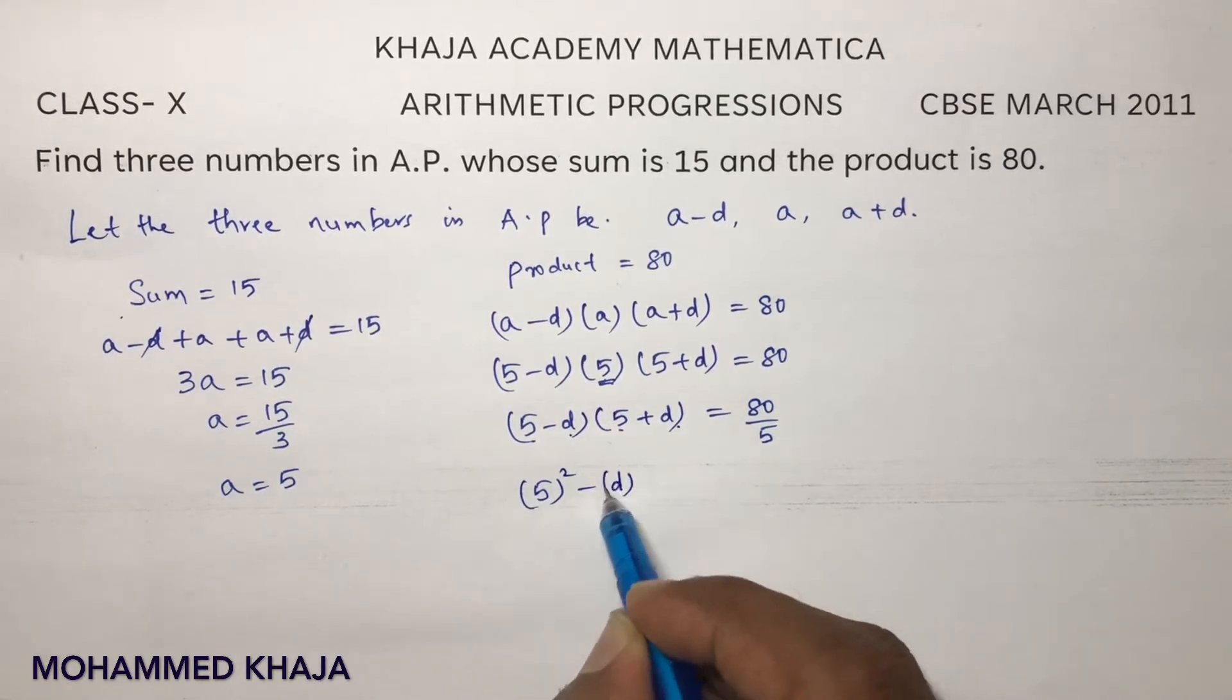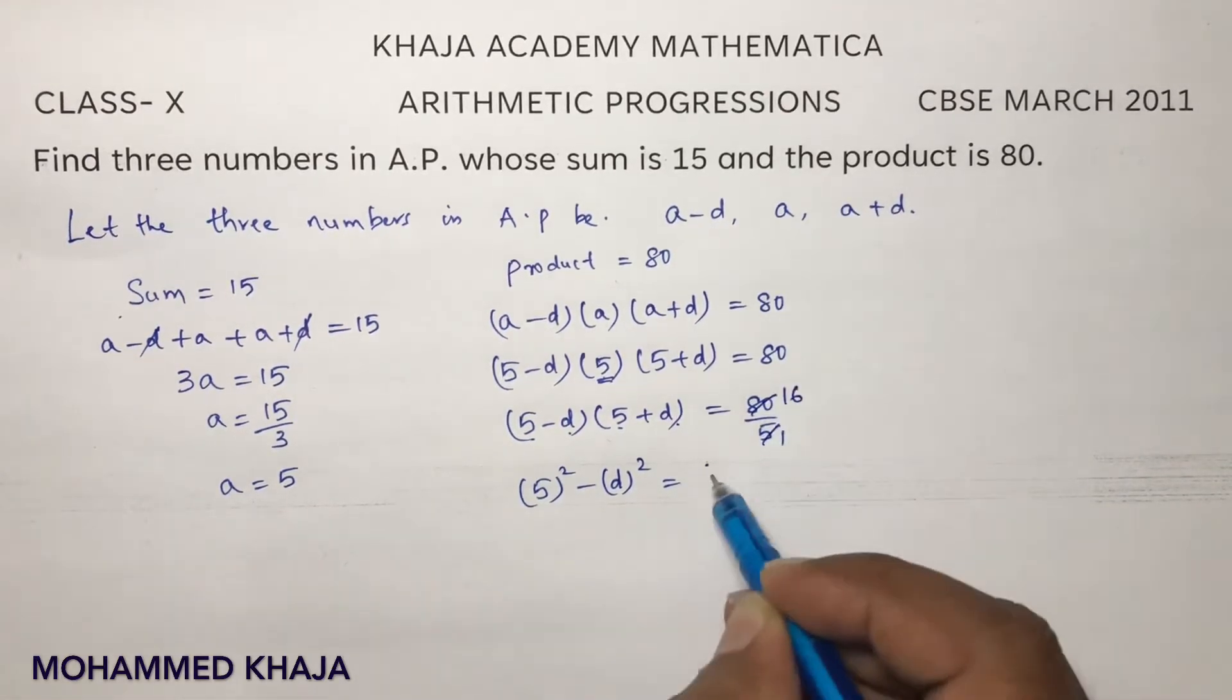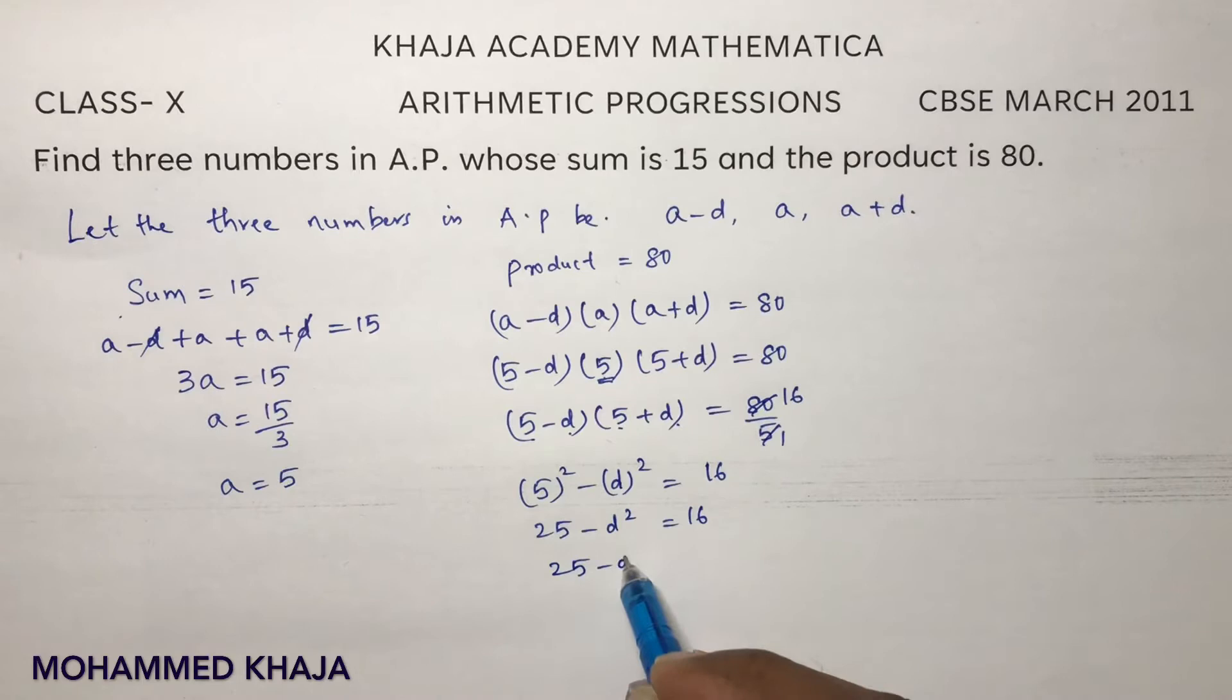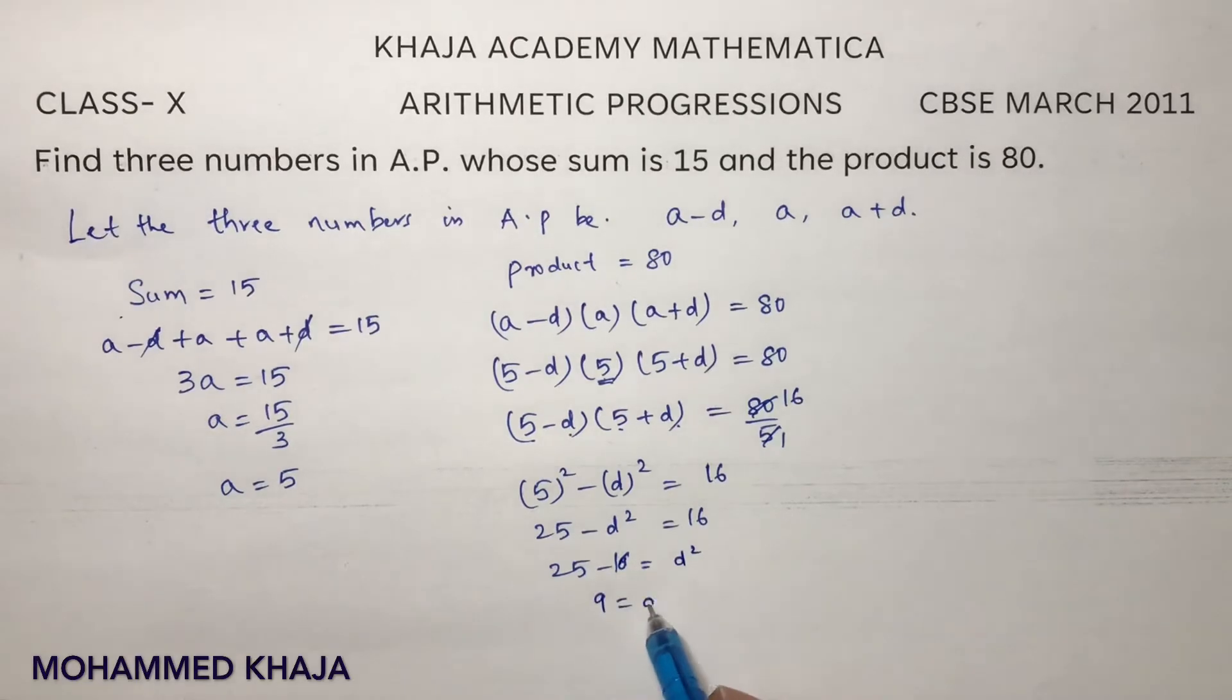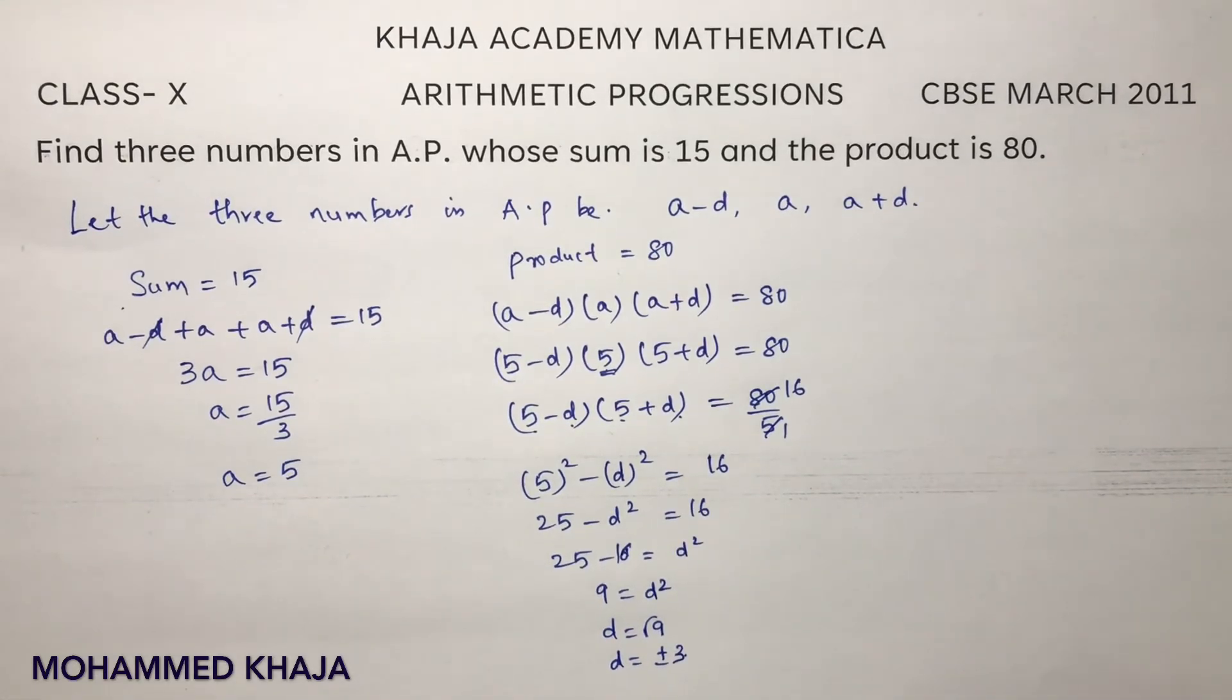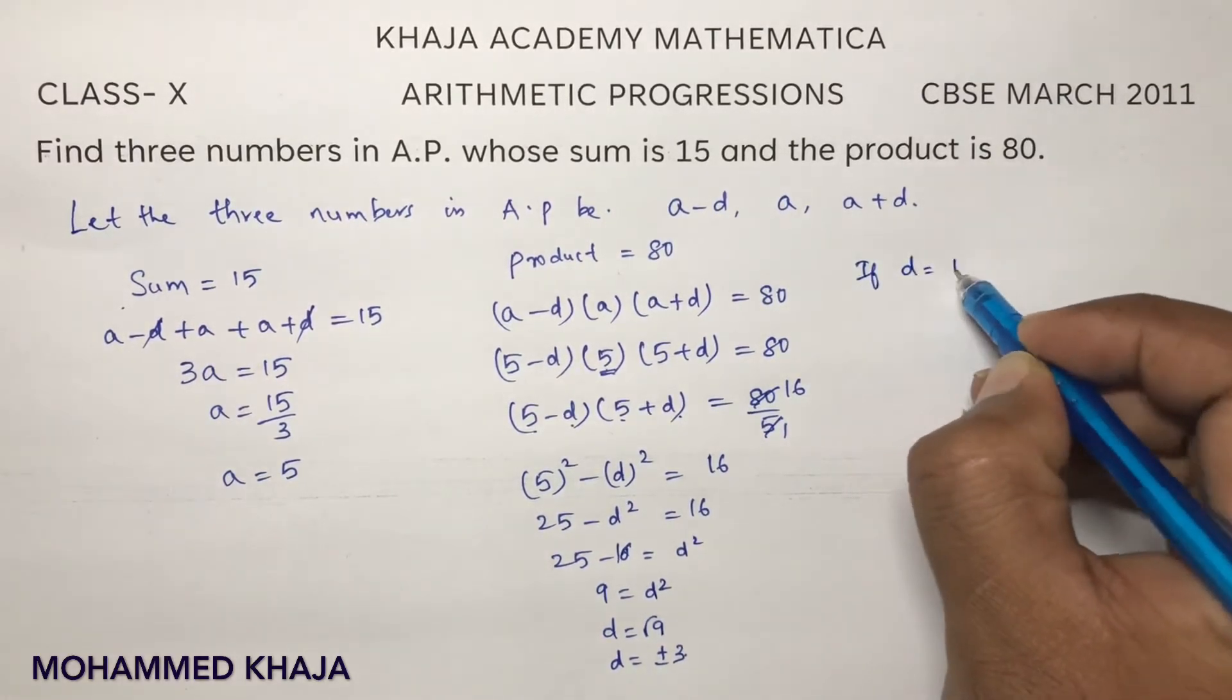Equals 5 times 16, so 25 minus D square equals 16. 25 minus 16 equals D square. 9 equals D square. D equals root 9. D equals plus or minus 3. The value of D is plus or minus 3.